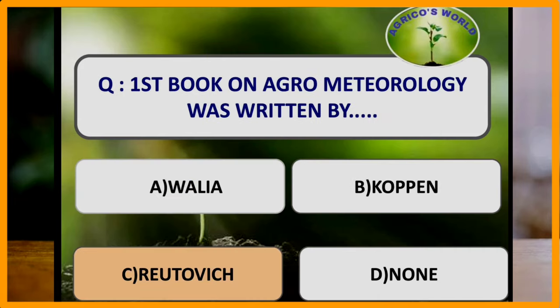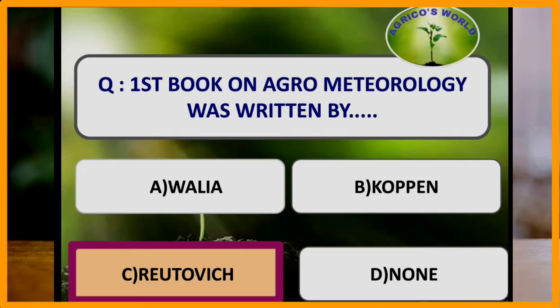First book on agrometeorology was written by which scientist? The first book on agrometeorology was written by the scientist Rutovich in the year 1854.